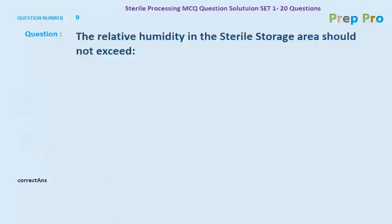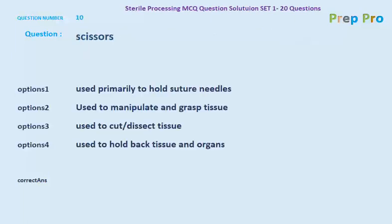Question number ten: the options are used primarily to hold suture needles, used to manipulate graft tissue, used to cut and dissect tissues, and used to hold back tissue and organs. The correct option is used to cut and dissect tissue, which is the function of scissors.